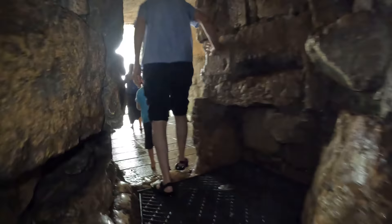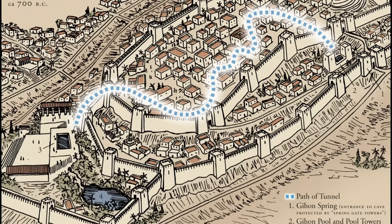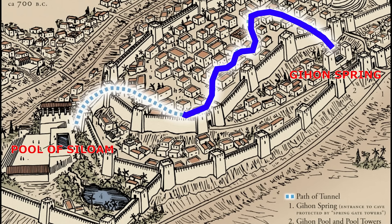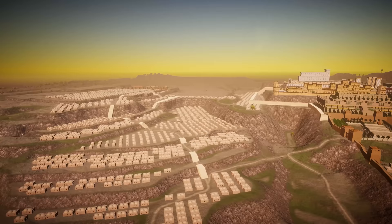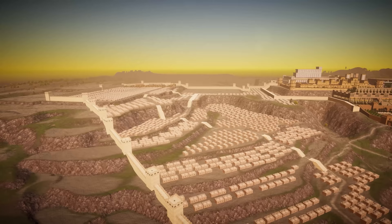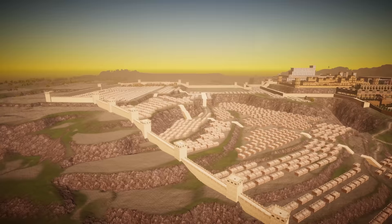There is another tunnel built by King Hezekiah himself — it's a wet tunnel. At the end of it, there is an amazing story. King Hezekiah built this tunnel to transfer water from the Gihon Spring to the pool of Siloam. To protect the pool of Siloam and the rest of the city, King Hezekiah built massive walls to survive the Assyrian invasion.